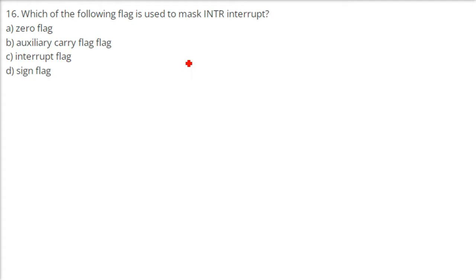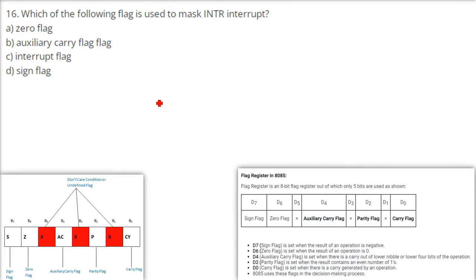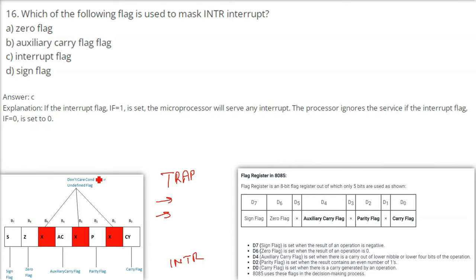Which flag is used to mask the INTR interrupt? Trap has the highest priority and INTR has the lowest. When we talk about interrupt flags, the interrupt flag (IF) is different from the basic ALU flags. If the interrupt flag IF is set to 1, the microprocessor will serve any interrupt. If IF is set to 0, the processor ignores the interrupt service.